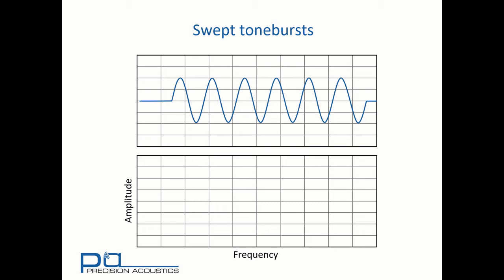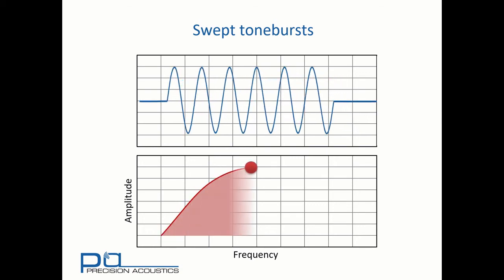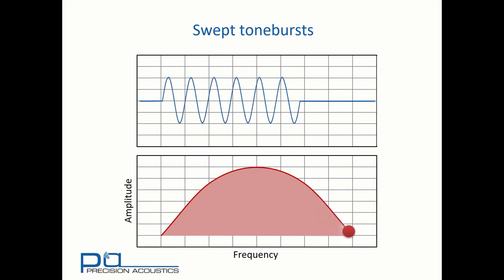And then by adjusting the function generator that's producing the signal, we can systematically increase the frequency. And as we sweep through frequency, we will find that there will be a change in amplitude, corresponding to the transducer system function, and also a reduction in duration, as we have shorter and shorter signals for the same number of cycles.